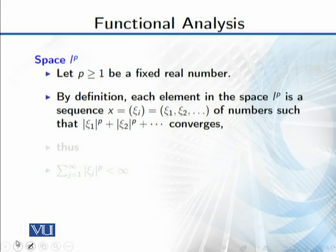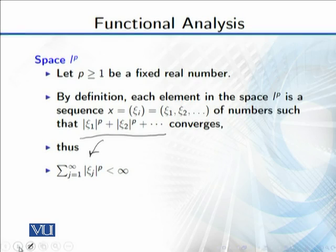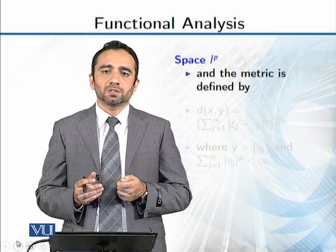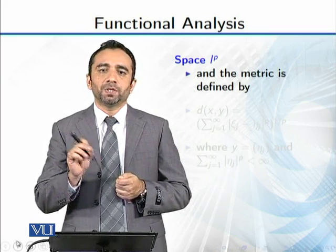Now, this is convergent. This means that Σ|ξ_i|^p converges. We have written it in summation form. This means that the value is less than infinity. So in this sequence space, you have a set of sequences, and sequences satisfy such that the summation of |ξ_i|^p is converged.